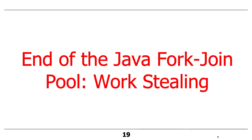That's the overview of work stealing in a fork-join pool, and that's really what gives it a lot of its power. The whole purpose of doing this is to ensure maximal utilization.